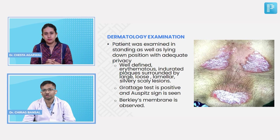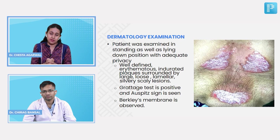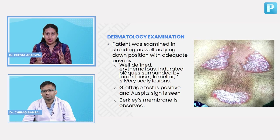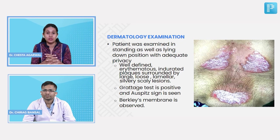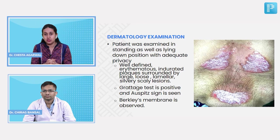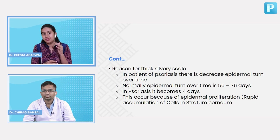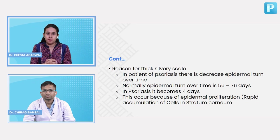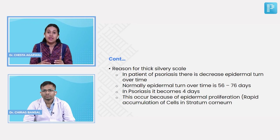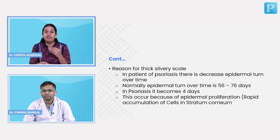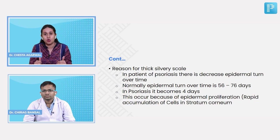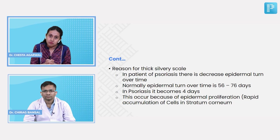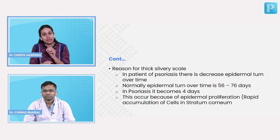The reason for thick silvery scales in psoriasis is increased epidermal turnover. Normal epidermal turnover time is 56 to 76 days, but in psoriasis, autoimmune T lymphocytes cause rapid epidermal proliferation. Instead of 56 to 72 days, the epidermis now takes only 4 days to go from stratum basale to stratum corneum, causing rapid accumulation of different layers of stratum corneum, which forms the scales.